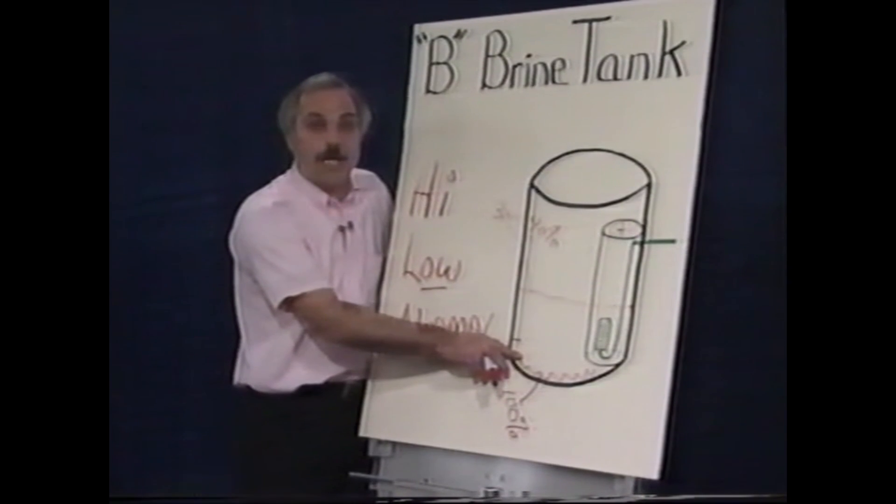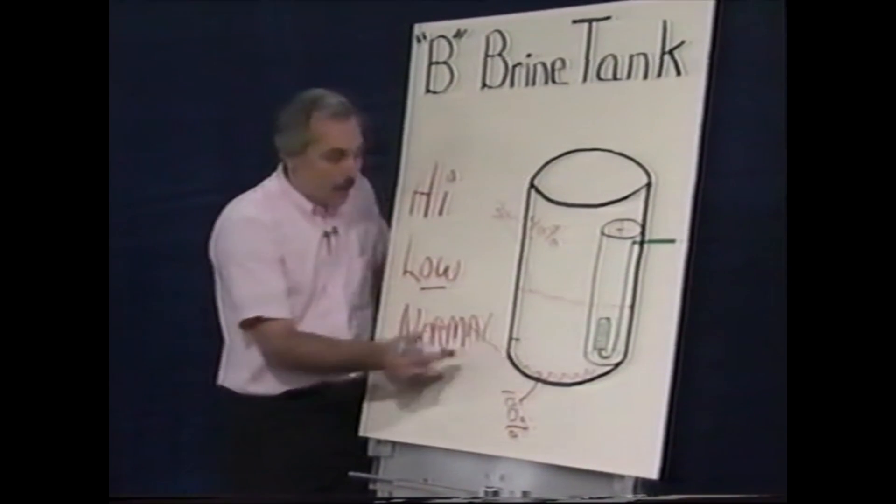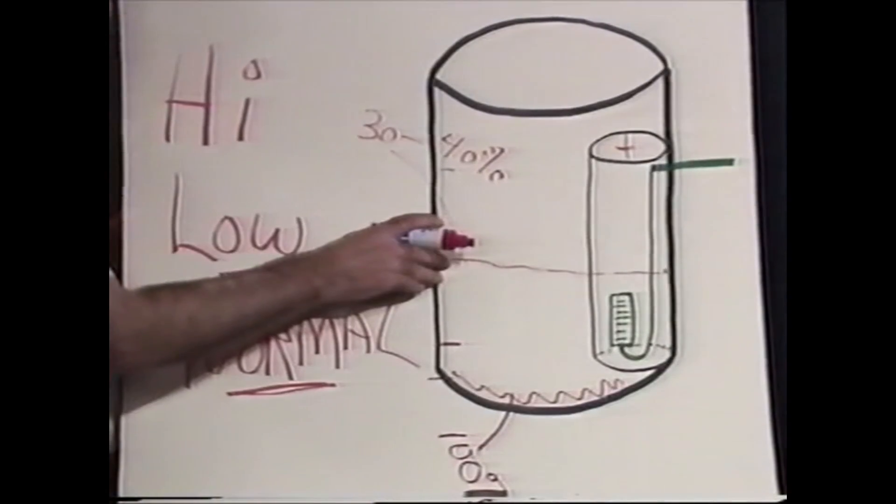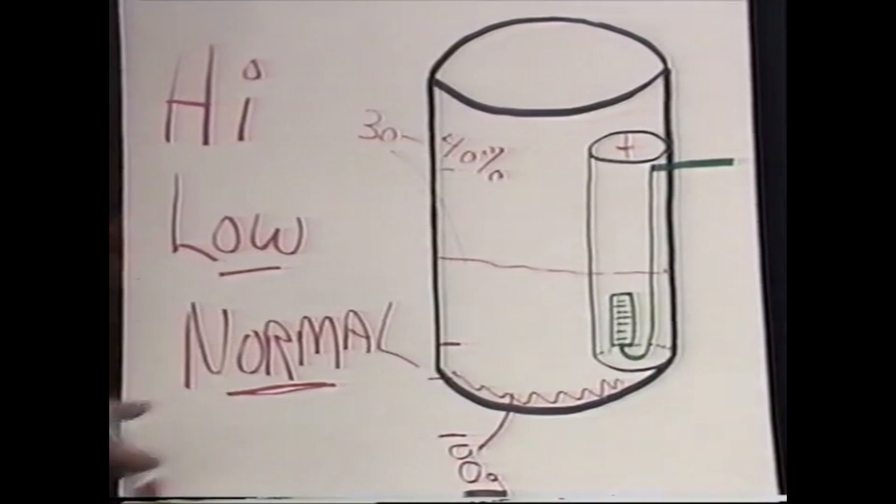The last condition is the most difficult to diagnose: the water level is normal. You've checked the bypassing, checked the toilets, no additional people, there's salt in the brine tank.